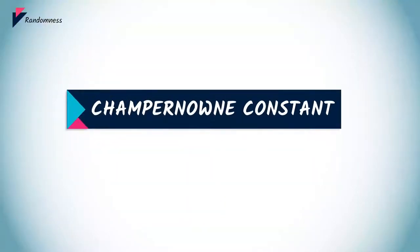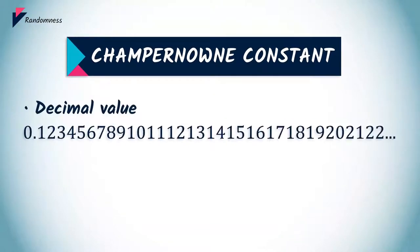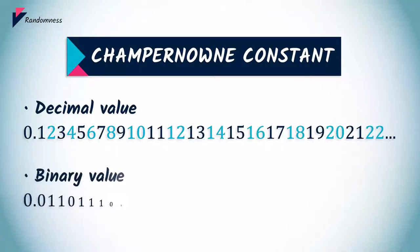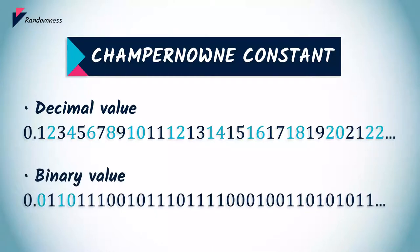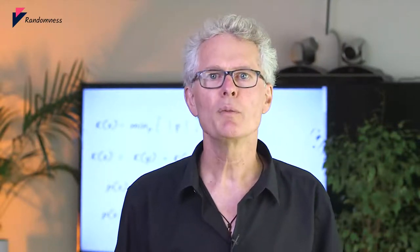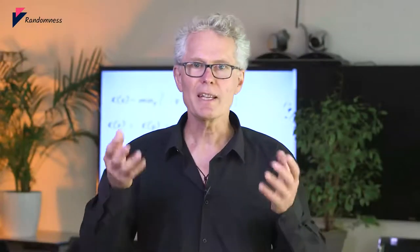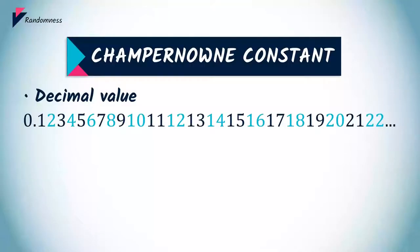The Champernowne constant is 0.1234567891011121314, and so on. This real number contains all integers as substrings — it contains all finite objects that can be digitally coded. You understand why it is totally useless: if you search within the Champernowne constant to find my passport number, you must already know exactly what you are looking for to find it. The Champernowne constant is interesting because it is normal, which means that it passes all the frequency tests.